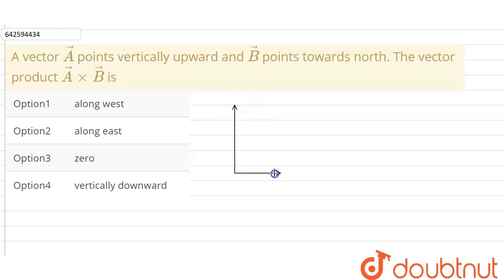So let us suppose this represents our north, east, west and south. Over here, this is north, this is south, this is east and this is west.